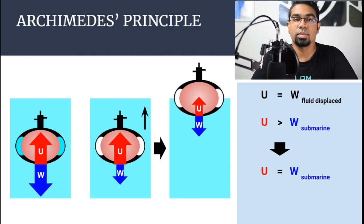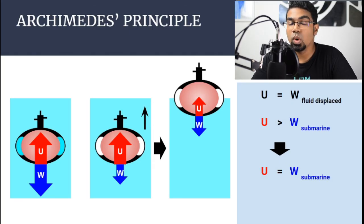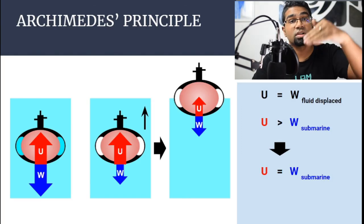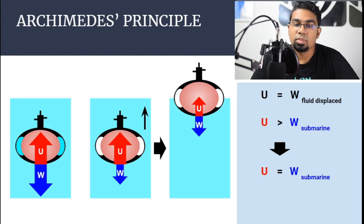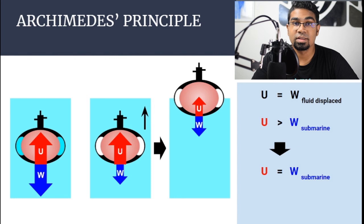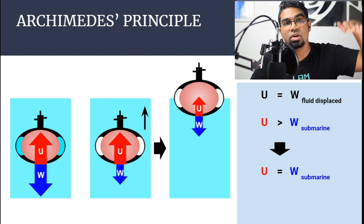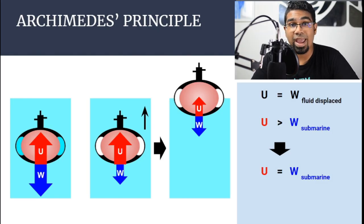The key difference between the ship and submarine applications of Archimedes' principle is that a ship's weight generally does not change during its journey, while a submarine constantly changes its weight by adding or removing water from its ballast tanks, controlling its depth. Archimedes' principle can also be applied to air — can you name one or two objects flying in the air that apply Archimedes' principle?